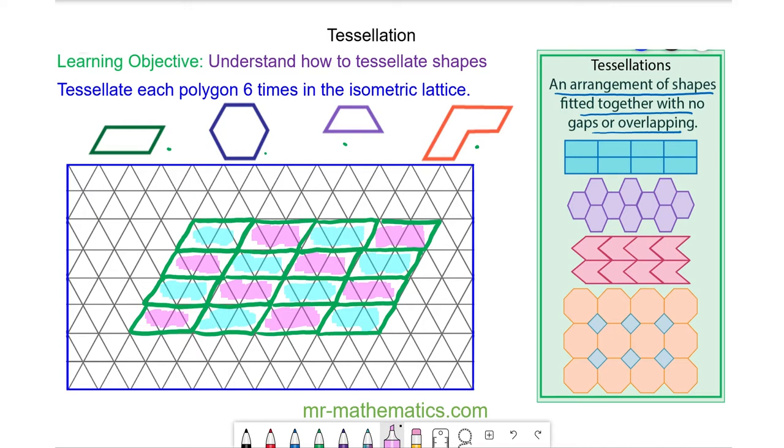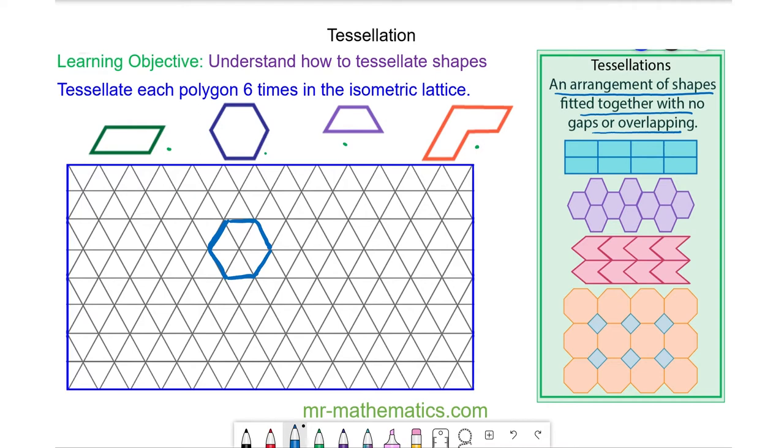Okay let's try the hexagon. To show this hexagon tessellates I'm going to arrange multiple copies across the lattice with no gaps and no overlaps.